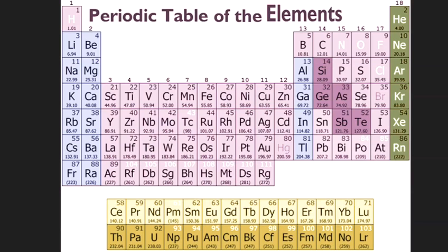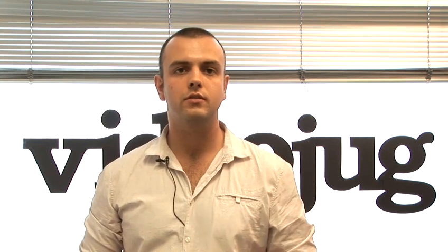The periodic table is made of elements. The idea of elements traces back to ancient Greece. Aristotle proposed that there were four elements which made up everything on earth: earth, fire, wind and water.